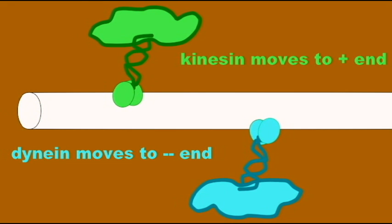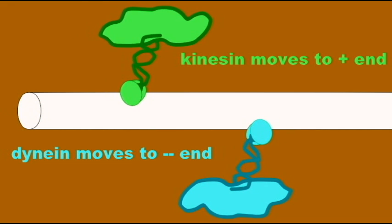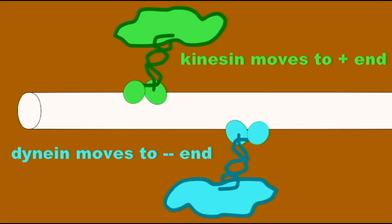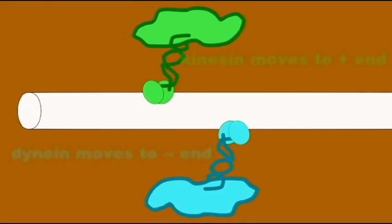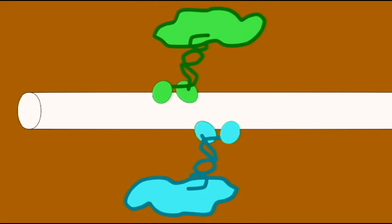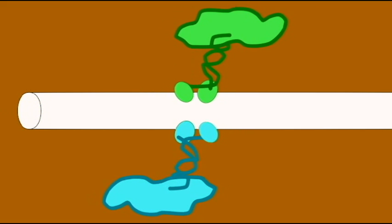Microtubules are often used for transport within a cell. There are several proteins which can slide along the microtubule as a motor and then attach to other substances and bring them along with them.